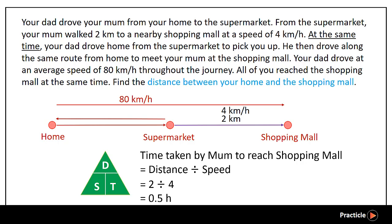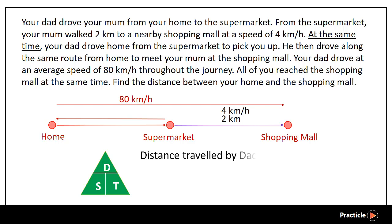During this 0.5 hours, your mom traveled from the supermarket to the shopping mall, while your dad traveled from the supermarket back home to the shopping mall. So the time taken by your dad to travel that distance is 0.5 hours as well. We also know your dad's speed, so we can find the distance he traveled: speed times time, so 0.5 times 80 gives us 40km. Now we know your dad traveled a total distance of 40km.